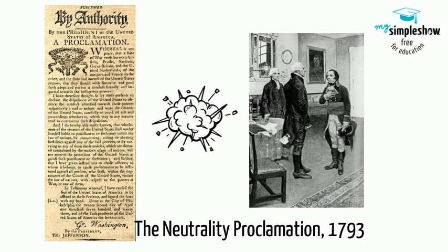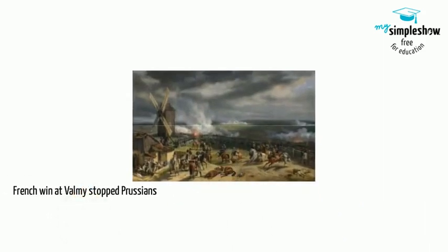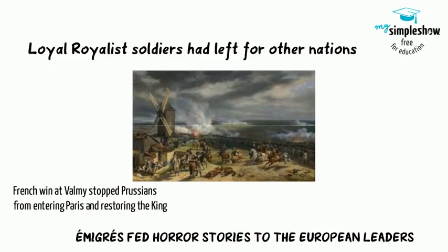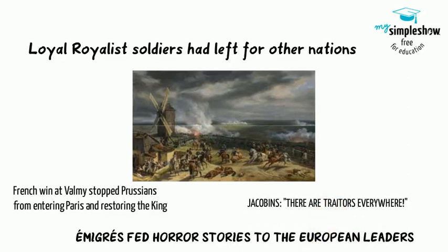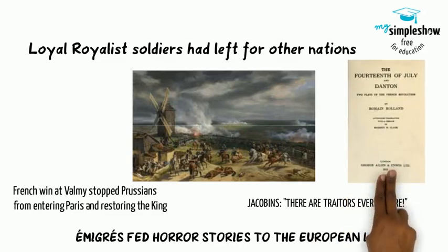The war was a disaster for the Convention. The Prussians especially were tearing into French troops on the battlefield, partly because officers who had been loyal to the king abandoned France with the émigrés and were fighting for Prussia. Also, the Jacobins refused to see the reality of the situation they found themselves in, so they began to blame disloyalty, successfully fanning the flames of paranoia throughout France.